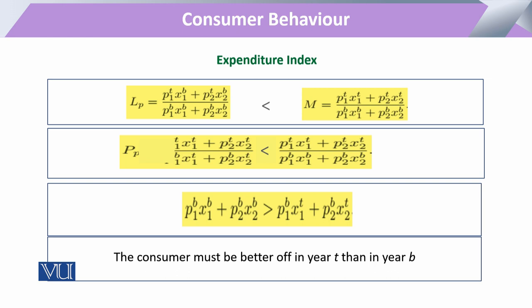If the Laspeyres index is less than 1, it means the Laspeyres index is less than the expenditure index. Keeping this equation in view, when we cross-multiply: the denominator terms move to the other side, the numerator cancels out, and we see that on the left side we have all expenditures on commodities at the base period, and on the right side we have all commodities' quantities at the current period valued at base period prices. This means the consumer is better off in time period T than in base period B.